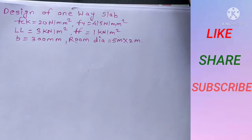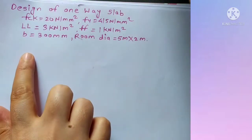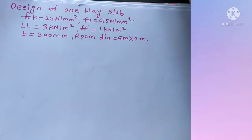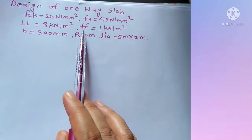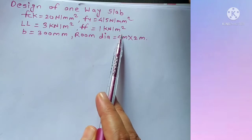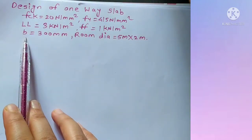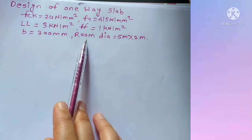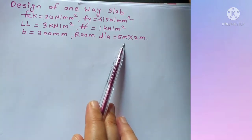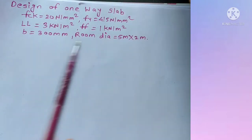Hello everyone, welcome back to my YouTube channel. In today's session we are going to design a one-way slab. The given data is: fck = 20 N/mm², fy = 415 N/mm², live load = 3 kN/m², floor finish = 1 kN/m², width of support = 300 mm, assuming simply supported case, and room clear dimensions = 5 m × 2 m.